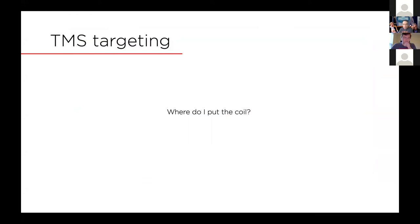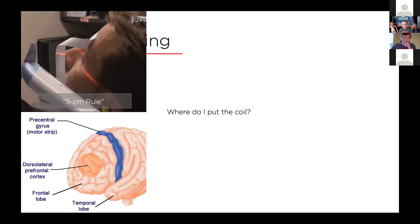Starting with TMS, one of the questions that comes up all the time is: how do I target? Where do I put the coil on the head? The clinical standard for coil placement for depression treatment, which is FDA approved, is the so-called five centimeter rule. In this approach, you identify the motor hotspot that would induce a reliable thumb twitch — either observed visibly or using measurements of motor evoked potential — and then you move the coil anterior to that hotspot five centimeters in the parasagittal plane, arriving at what you might call the dorsolateral prefrontal cortex, the site for treatment for depression.